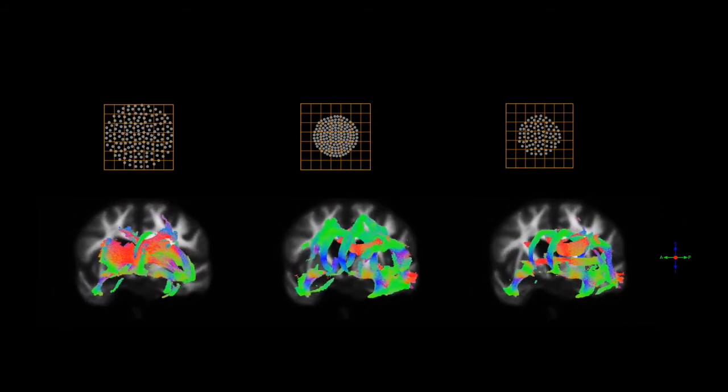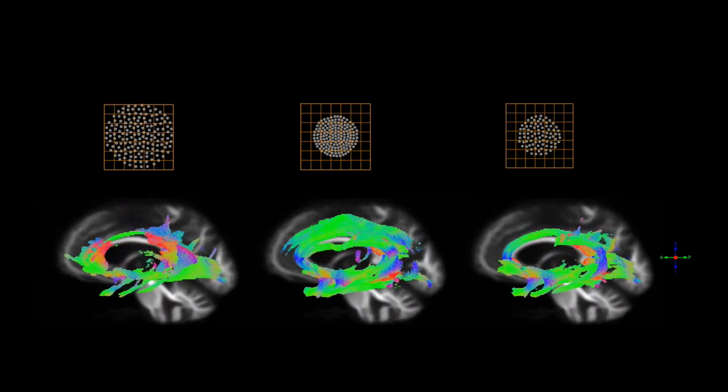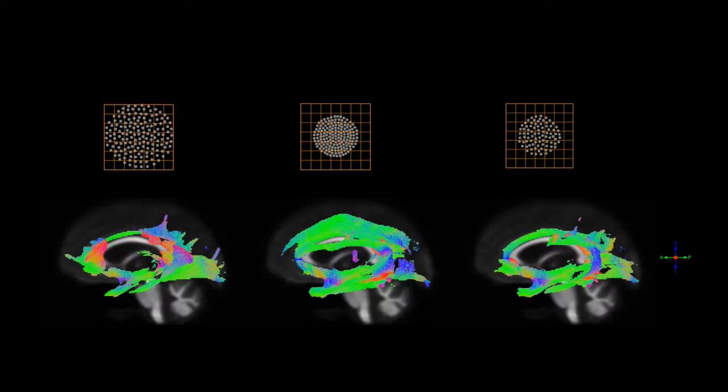The white matter fibre pathways affected in Alzheimer's disease included specific fibre tracks that are thought to connect pathologically and functionally affected grey matter regions from the previous literature.